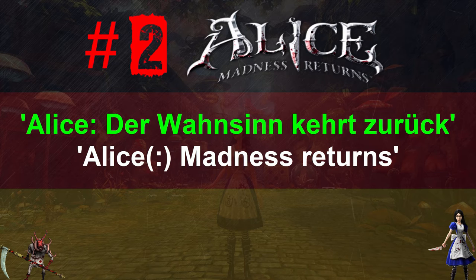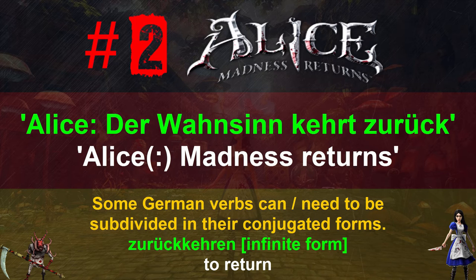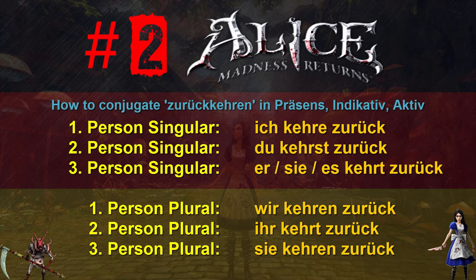This has to do with German verbs being two-part structures in many contexts. The infinitive forms are not subdivided, but their conjugated forms are: Ich kehre zurück, du kehrst zurück, er/sie/es kehrt zurück, wir kehren zurück, ihr kehrt zurück, sie kehren zurück.